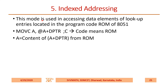Index addressing mode is used to access data elements of lookup entries located in the program code ROM of the 8051. You write MOVC A, @A+DPTR. 'C' stands for code, meaning it is ROM. A will be updated with the content found at the address A plus DPTR — that value is taken from ROM and moved to the A register.